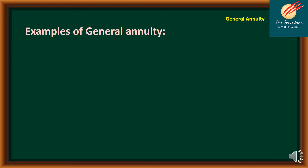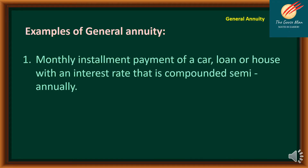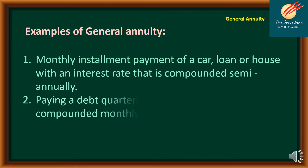Examples of general annuity include: monthly installment payment of a car loan or house with an interest rate that is compounded semi-annually — you pay monthly but the compounding rate is semi-annually, so they are not the same. Another example is paying a debt quarterly when the interest is compounded monthly.